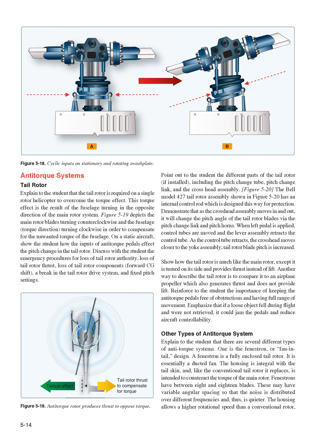Explain to the student that the tail rotor is required on a single rotor helicopter to overcome the torque effect. This torque effect is the result of the fuselage turning in the opposite direction of the main rotor system. On a static aircraft, show the student how the inputs of anti-torque pedals affect the pitch change in the tail rotor. Discuss with the student the emergency procedures for loss of tail rotor authority, loss of tail rotor thrust, loss of tail rotor components, forward CG shift, a break in the tail rotor drive system, and fixed pitch settings.